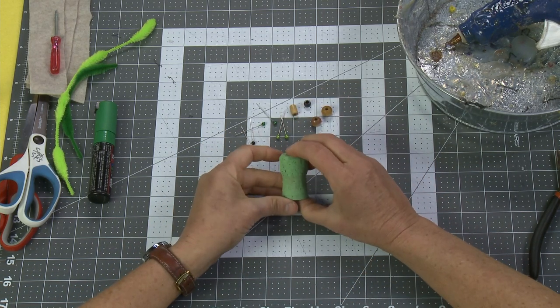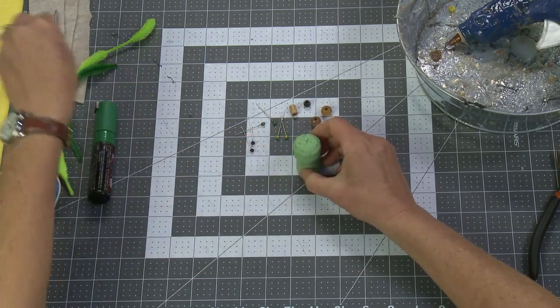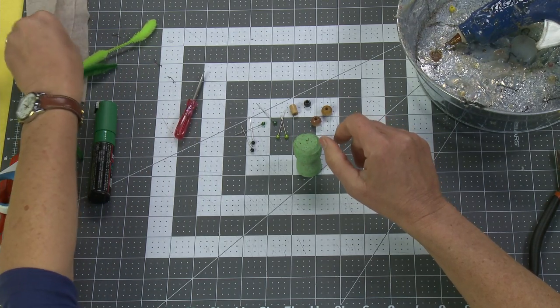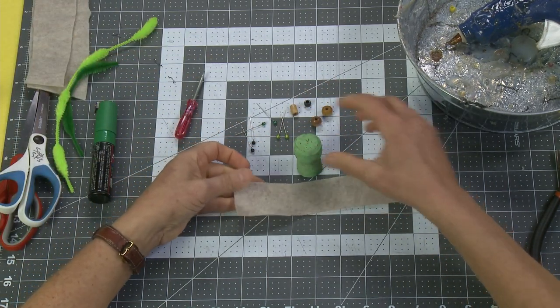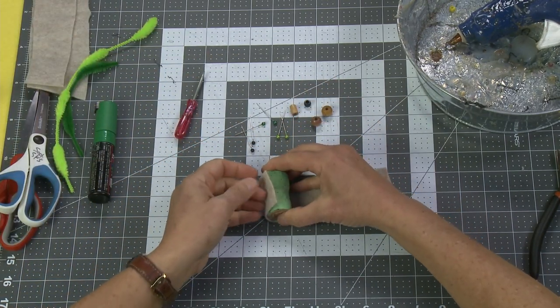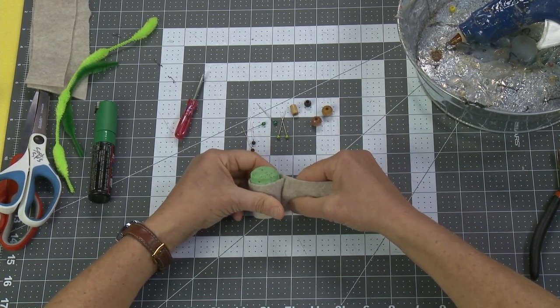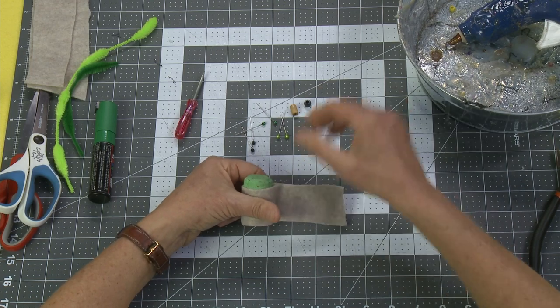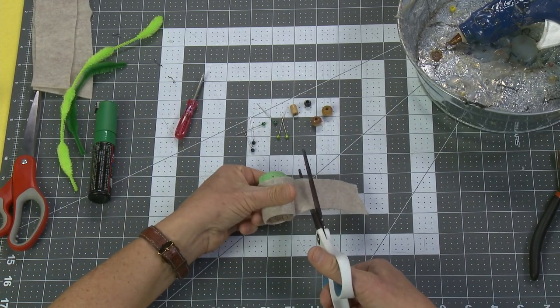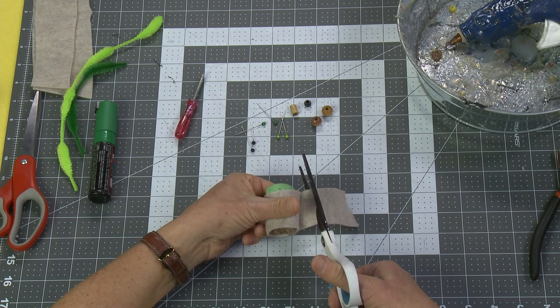The next step is to make his little coat. I'm just going to be using a little strip of felt and I'm just going to glue it around. I'm going to cut it so that it overlaps slightly but not too much.